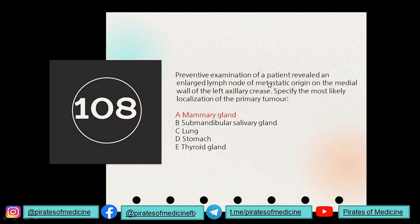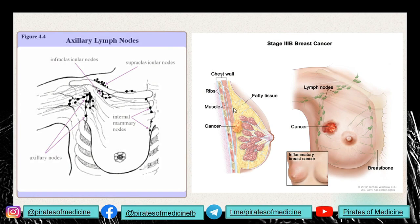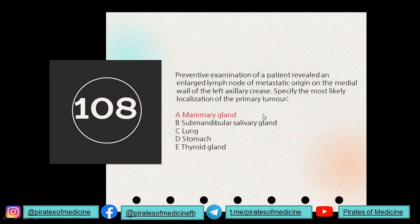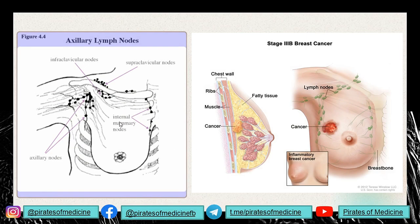Question 108: an enlarged lymph node of metastatic origin was found on the medial wall of the left axillary crease — what is the most likely location of the primary tumor? The left axillary crease is very closely located to the mammary gland. A tumor in the mammary gland can pass directly into lymph nodes in the axillary crease. Between mammary gland and lungs, the mammary gland is most proximate to the axillary lymph nodes.